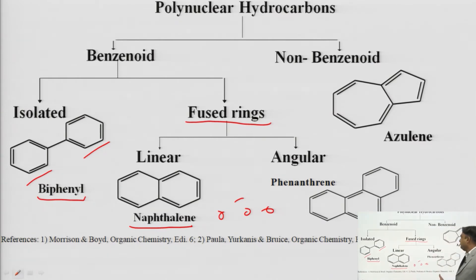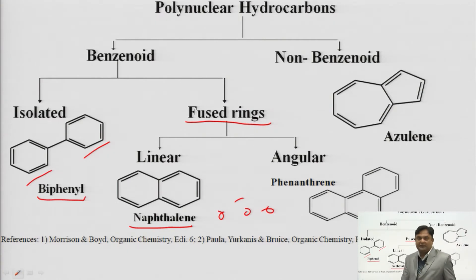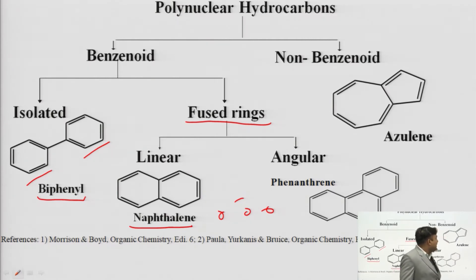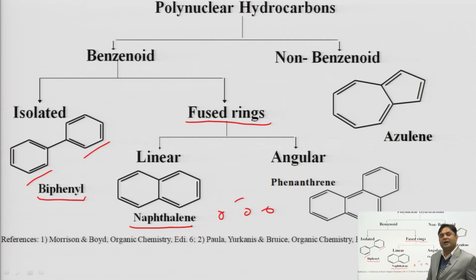The next category of fused ring benzenoid compounds is angular. Looking at phenanthrene, it has three phenyl rings, but out of three, two are fused at ortho position in the linear manner, while the third ring is fused in an angular manner. So phenanthrene comes in the category of angular fused ring benzenoid compounds. The second important category of polynuclear hydrocarbons is non-benzenoid compounds - compounds that do not have benzene in their structure. The important example of non-benzenoid compounds is azulene.